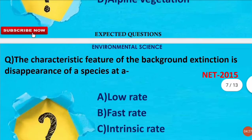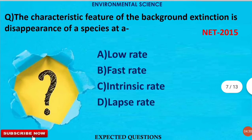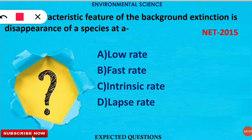The next question is: the characteristic feature of background extinction is the disappearance of a species at what rate? The correct option is option A — at a low rate. When a species disappears at a low rate, it is known as background extinction.